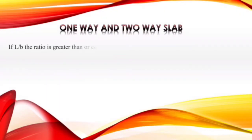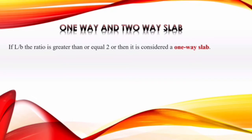So what is a one-way slab? If the length-to-breadth ratio is greater than or equal to 2, it will be considered a one-way slab. It means that if the ratio of length divided by breadth is equal to 2 or greater than 2, it will be called a one-way slab.